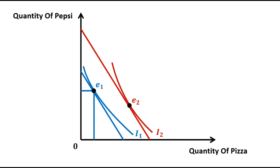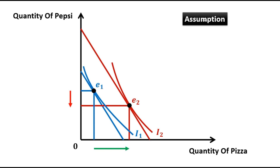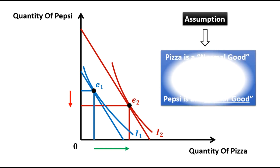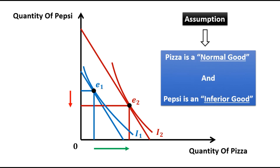The new optimum is achieved at point E2. In this figure, with an increase in income, the consumption of pizza is increased but the consumption of Pepsi is reduced. So this figure is drawn under the assumption that pizza is a normal good and Pepsi is an inferior good. Thank you.